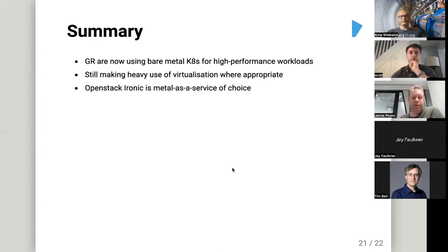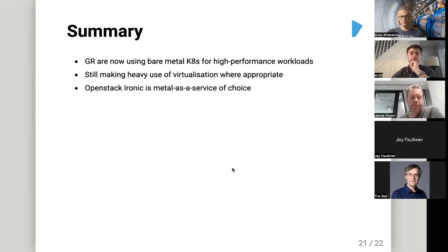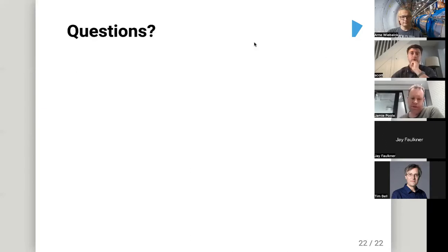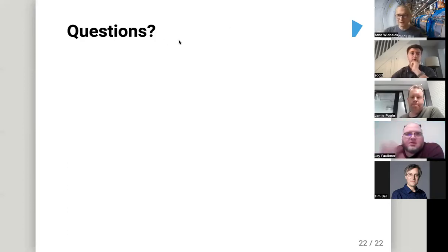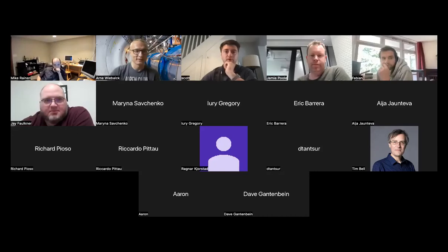In summary, G Research is now using bare metal for our high-performance workloads through Kubernetes. We still make heavy use of virtualization where appropriate. Where we are using bare metal, OpenStack Ironic is our metal-as-a-service of choice. That's it — any questions?